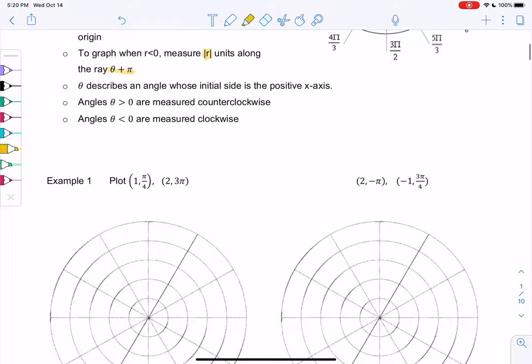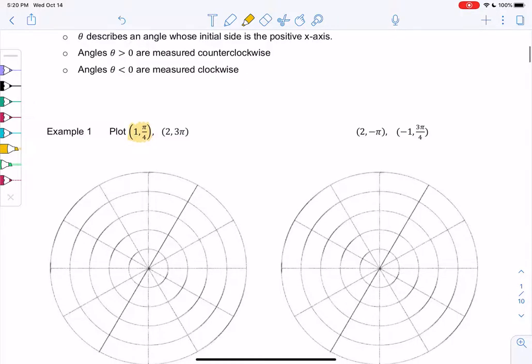Let's plot (1, π/4). π/4 would be right here, same as the unit circle. We go from here to here, then go out to a radius of 1, right here. That's it.